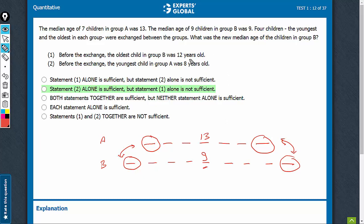Statement 1 says that the oldest child in B was 12 years old. So, this says, this guy is 12 years old.